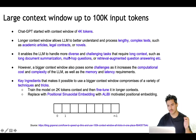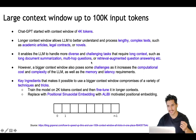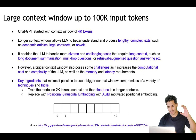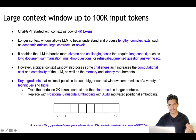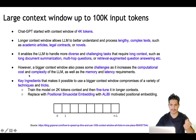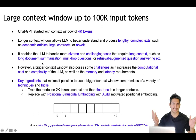A larger context window will also enable the LLM to handle more diverse and challenging tasks requiring long context, like long documentation summarization, multi-hop questions, or retrieval augmented question answering — where when answering a question you also take a reference from web pages or a database and use that as context in the input. However, a bigger context window also poses challenges: it increases the computational cost, complexity, memory, and latency requirements of LLMs.